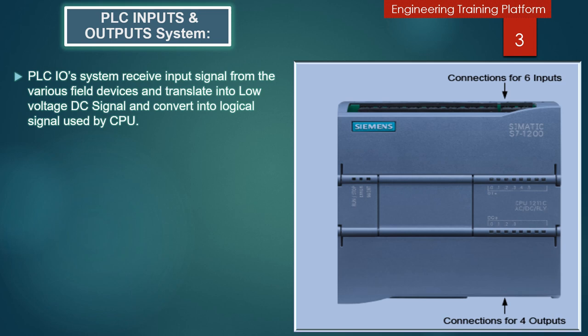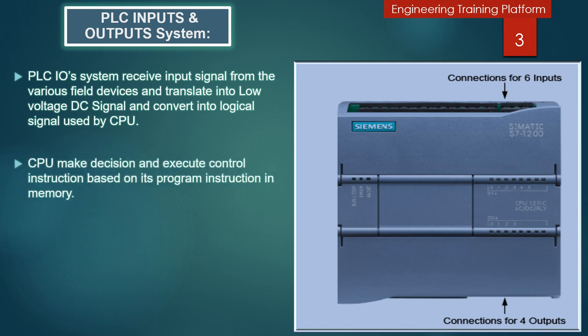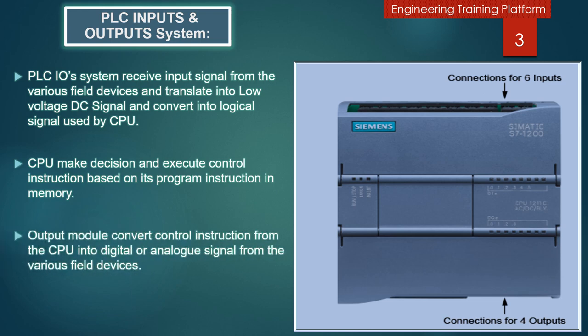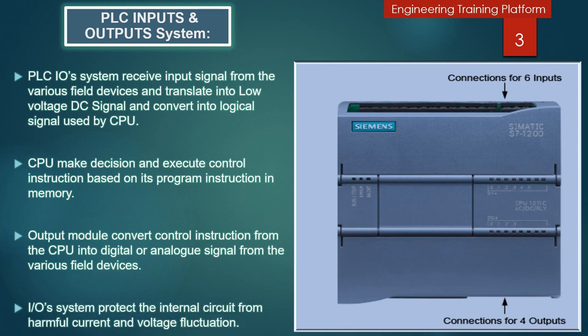The PLC I/O system receives input digital or analog signals from various field devices and converts them into logical signals used by the CPU with low voltage DC signal. The CPU makes decisions and executes control instructions based on its program in memory. The output module converts control instructions from the CPU into digital or analog signals for various field devices. The I/O system protects the internal circuit from harmful current and voltage fluctuations.